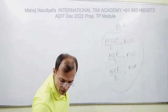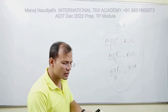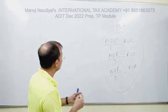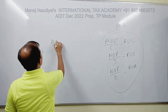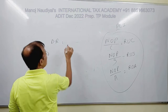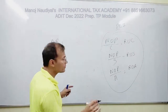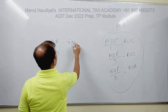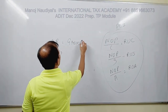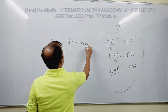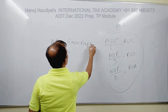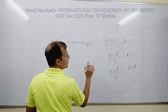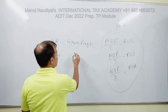Berry Ratio is the ratio of Gross Profits to OPEX — that is, Gross Profit to Operating Expenditure.